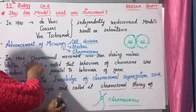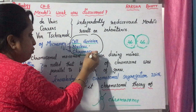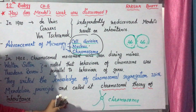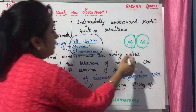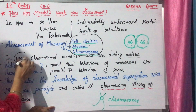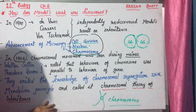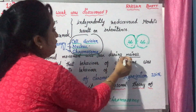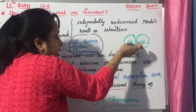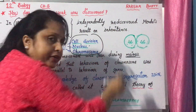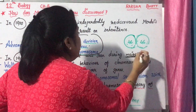Due to advancement of microscopy, nucleus and chromosomes became clearly visible. Most importantly — remember this for your exam — in 1902, chromosomal movement was seen during meiosis.